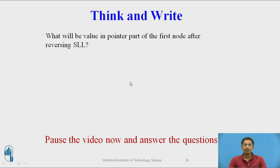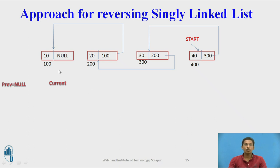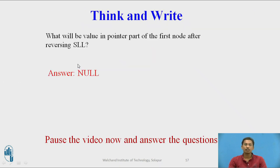You can pause the video and answer: what will be the value in the pointer part of the first node after reversing the singly linked list? The answer is null — originally node 10 was the first node, but after reversing it becomes the last node, so its next part holds null.